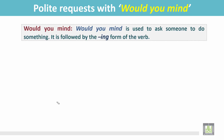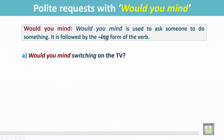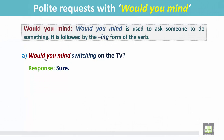'Would you mind' is used to ask someone to do something. It is followed by the -ing form of the verb. For example: 'Would you mind switching on the TV?' This means you are asking someone to switch on the TV. The person responds 'Sure,' meaning they will switch on the TV.